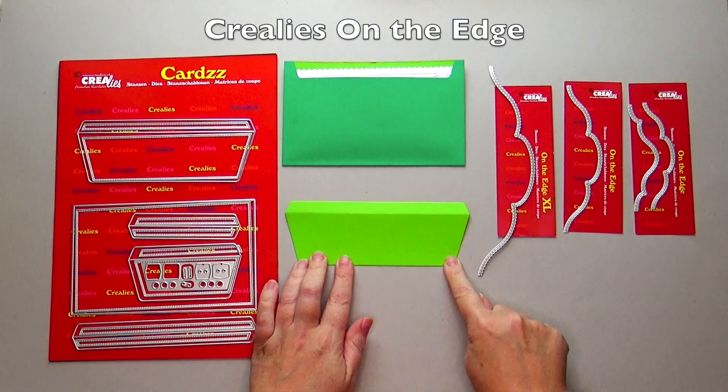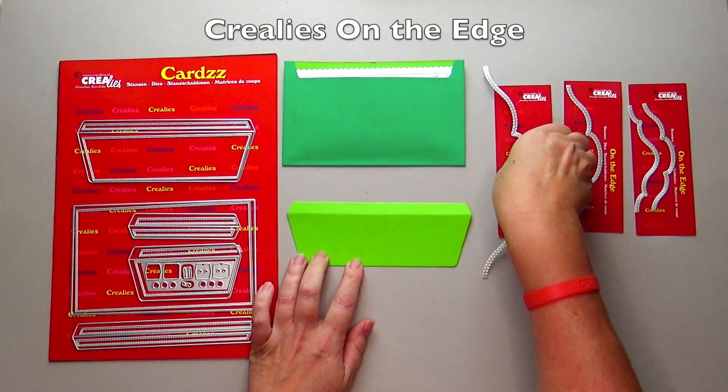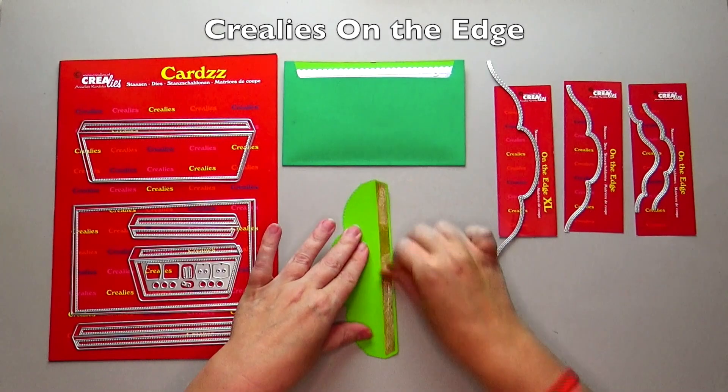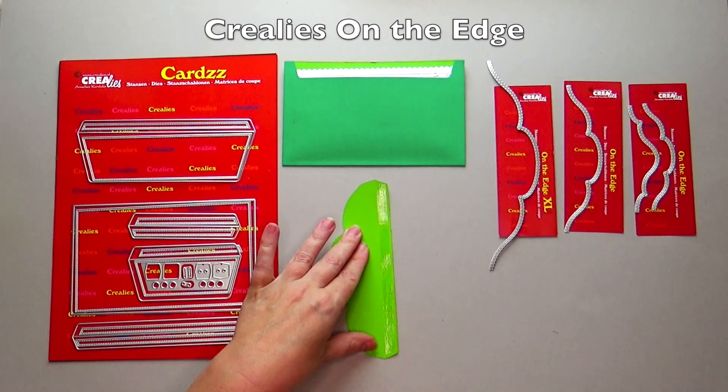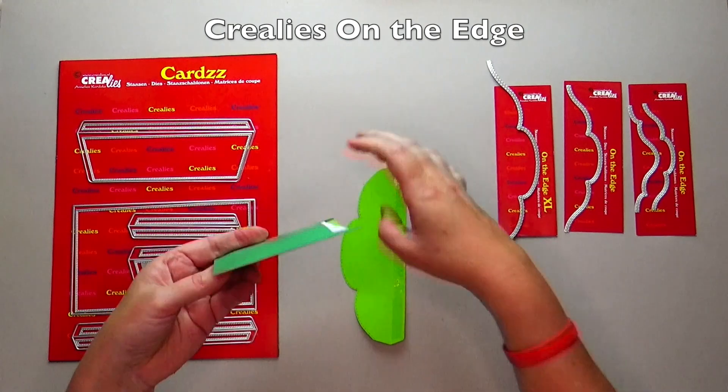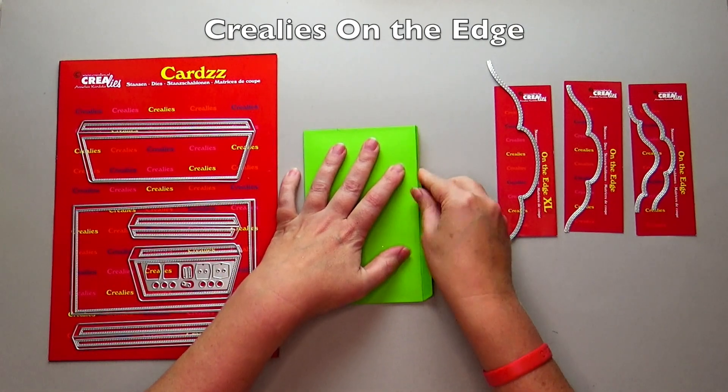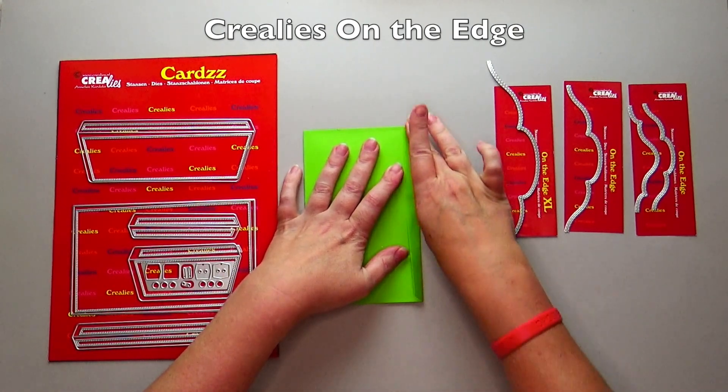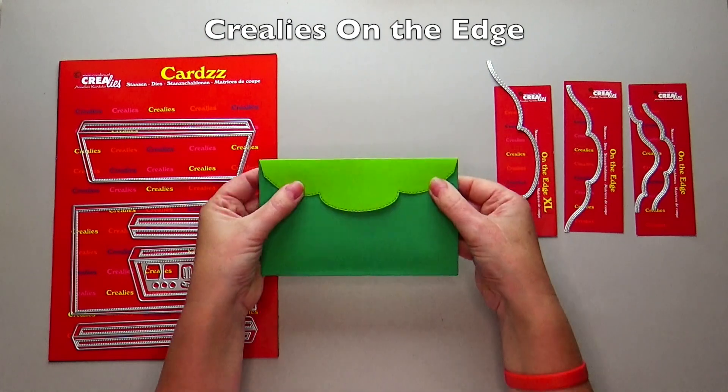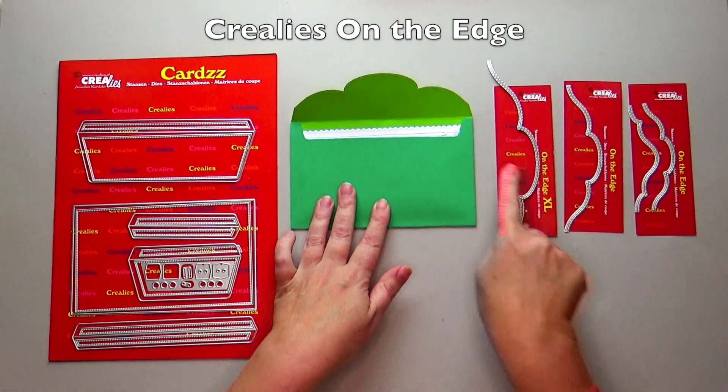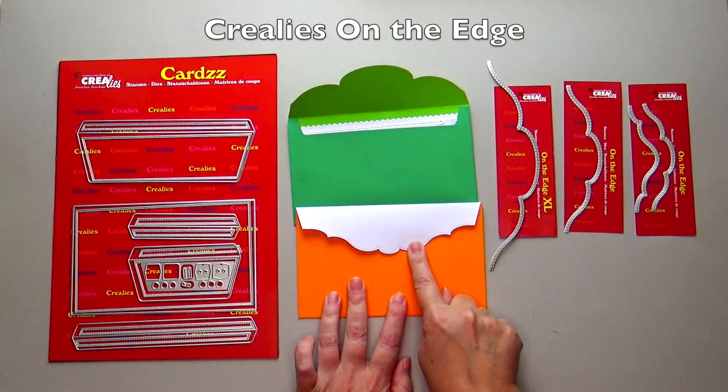Use a Crealies on-the-edge die to give the flap a beautiful edge. You can also die cut an edge for the lowered opening of the envelope.